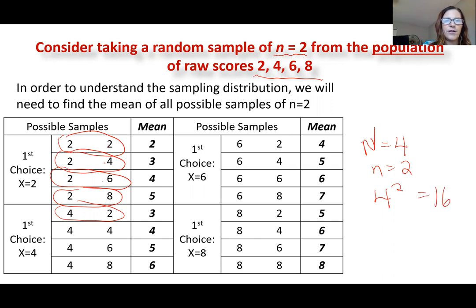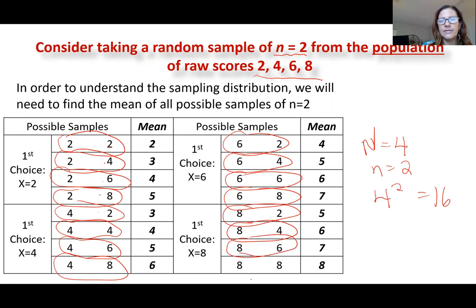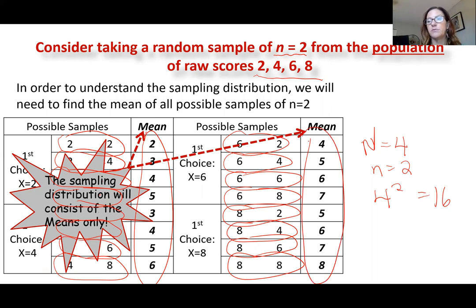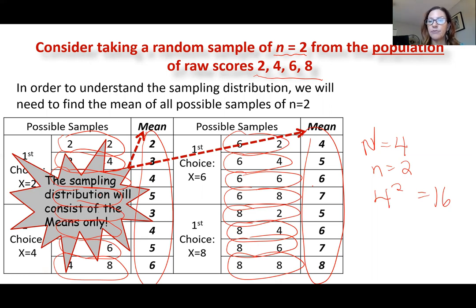If you count them out: 1, 2, 3, 4, 5, 6, 7, 8, 9, 10, 11, 12, 13, 14, 15, 16 — there are 16 samples of two. Once we get those samples, we can ignore the raw scores after we take the means. For example, 8 + 8 = 16 divided by 2 equals a mean of 8. We take the means for all possible samples to build the sampling distribution.